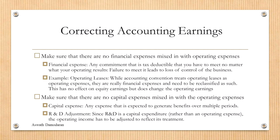Accounting earnings are typically unreliable for valuation. You want to discover intrinsic earnings. U.S. GAAP allows corporations to mix financial expenses with operating expenses, and also allows companies to mix capital expenses with operating expenses. Here are two major examples. The first is operating lease, also called off-balance sheet items. The second is R&D expenses.